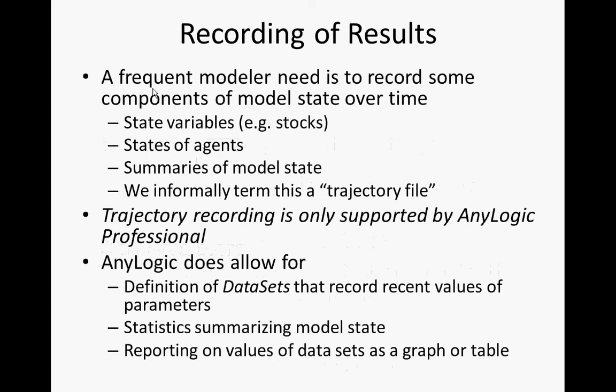There may be state variables, which are the number of people with different characteristics — things that are instantaneous or characteristics of the system right now. It could be summaries of that state or state at an individual level. In other cases, what may be of interest is more flow variables: how many people — these are rates from an epidemiological perspective — or the number of incident cases within the past week within the model. That's different. You're not looking at the model at one particular point in time; you have to count it up over time, accumulate those, and then use it.